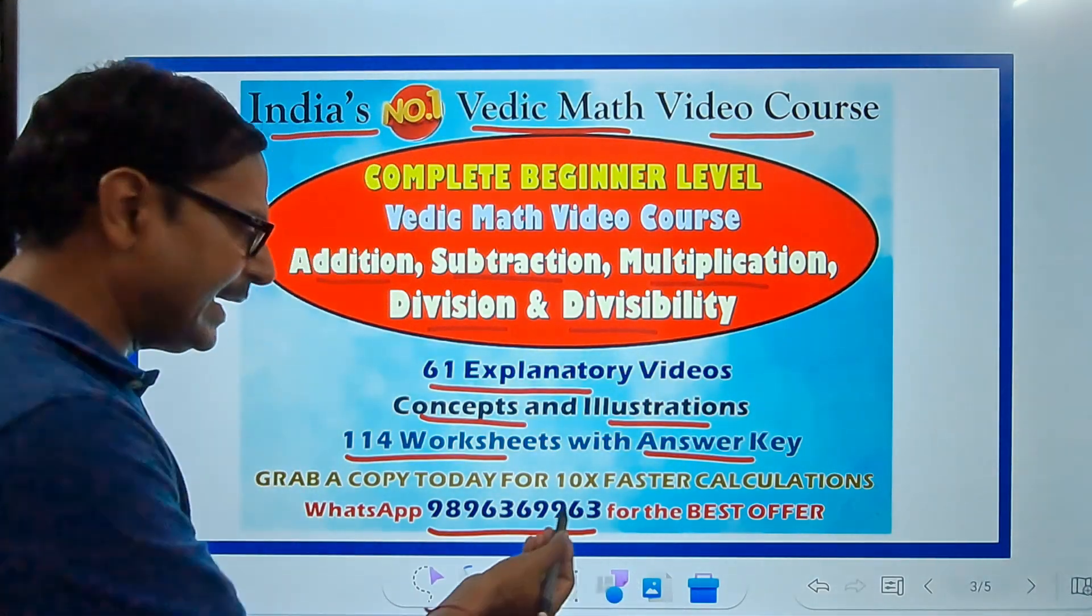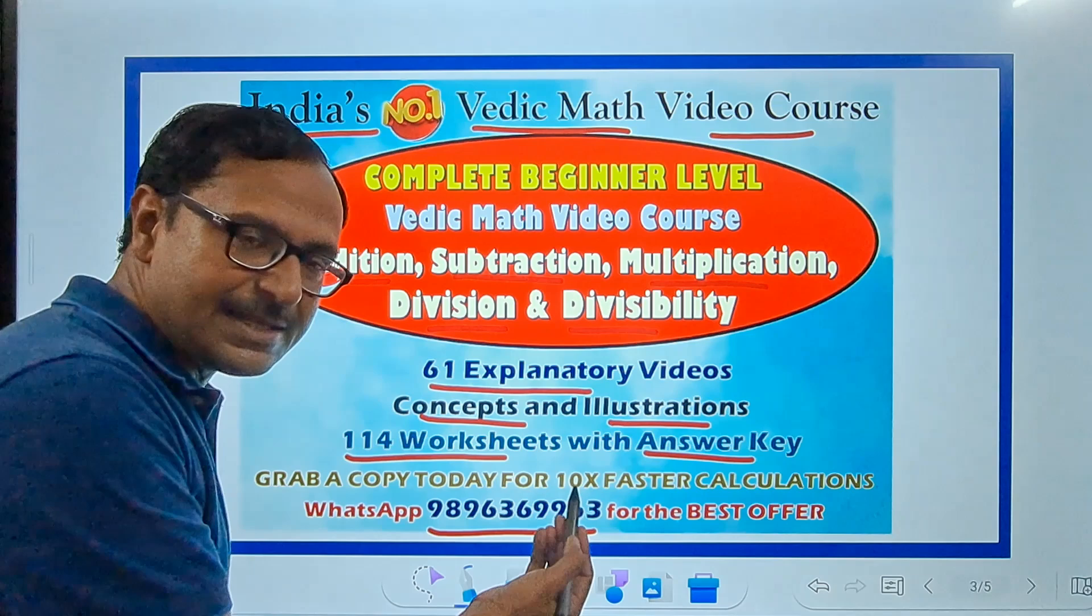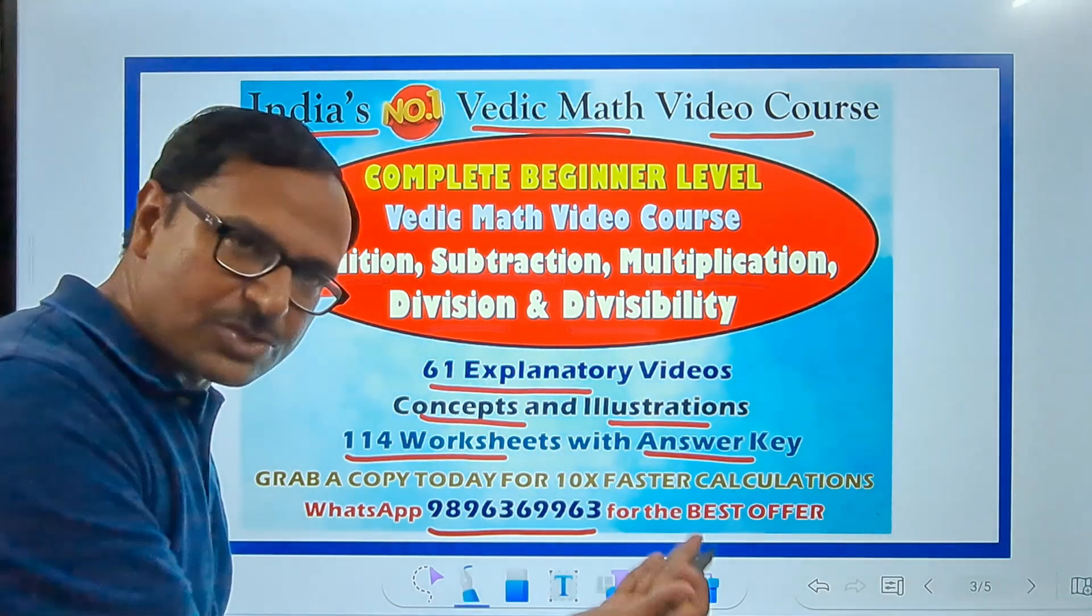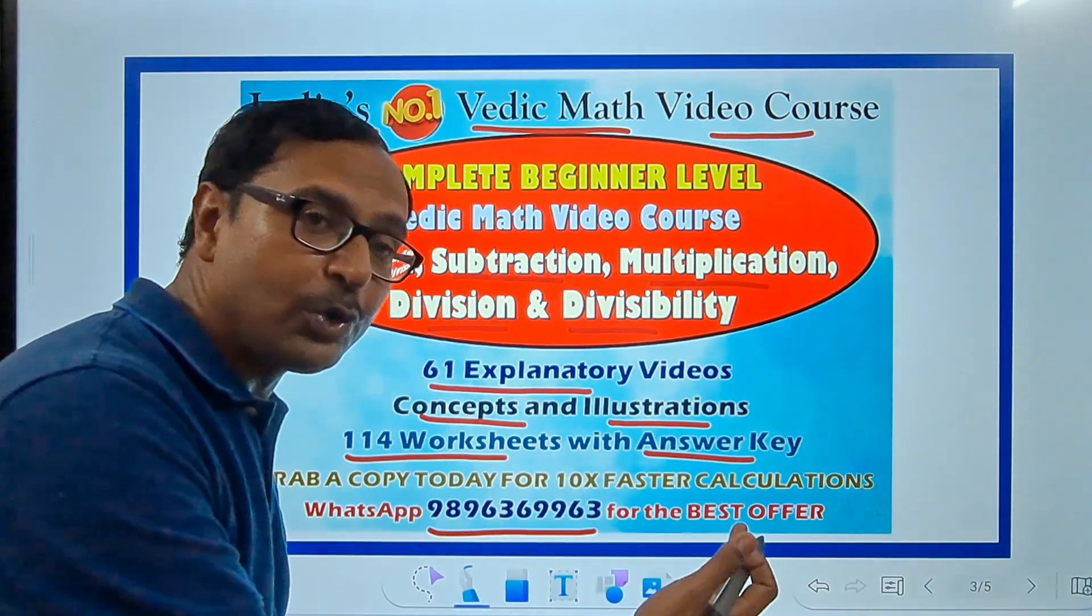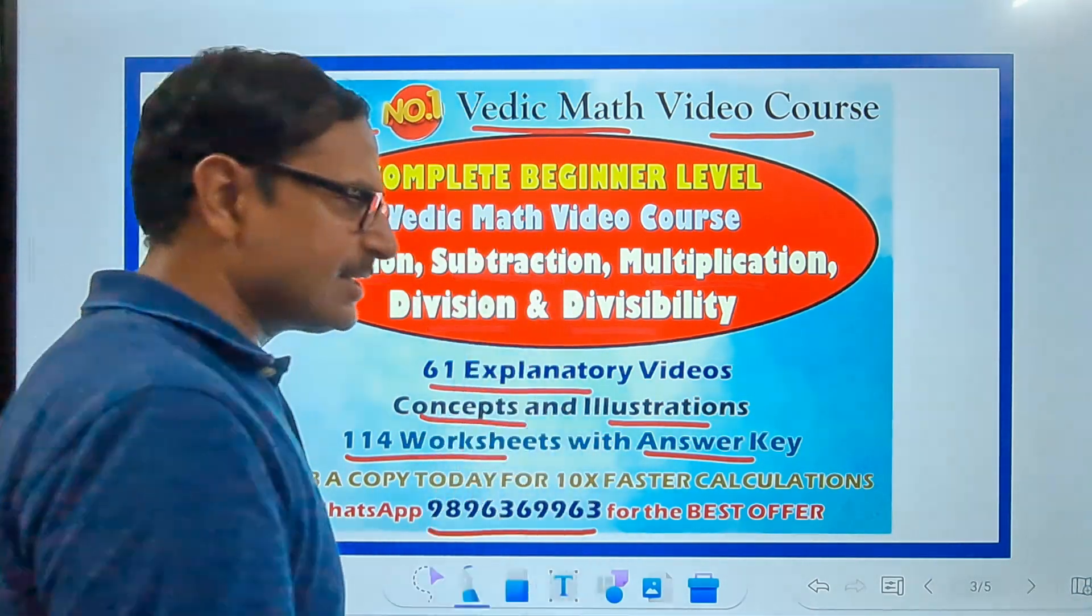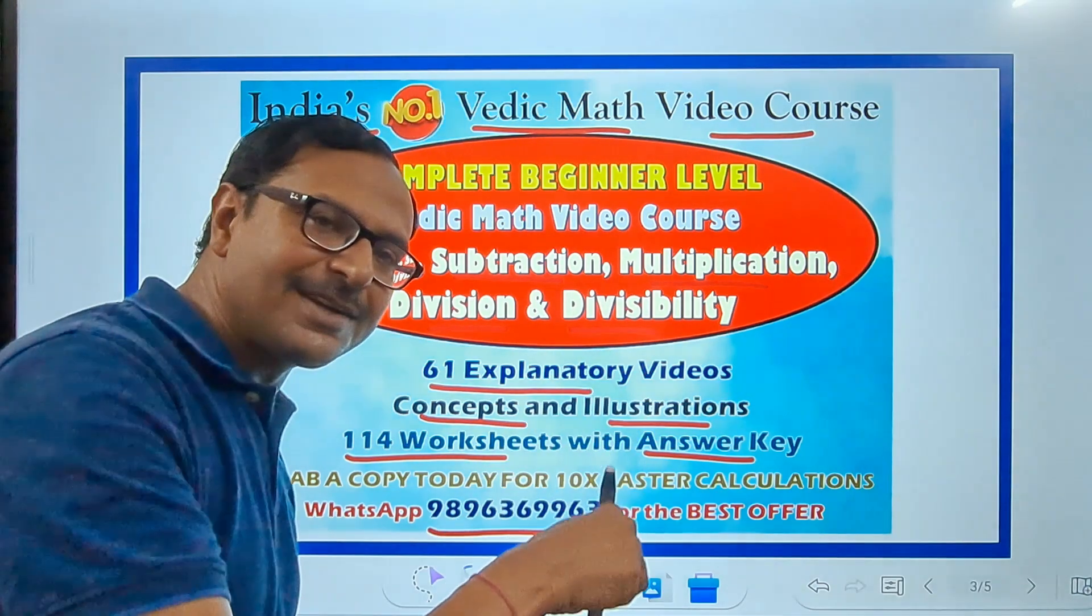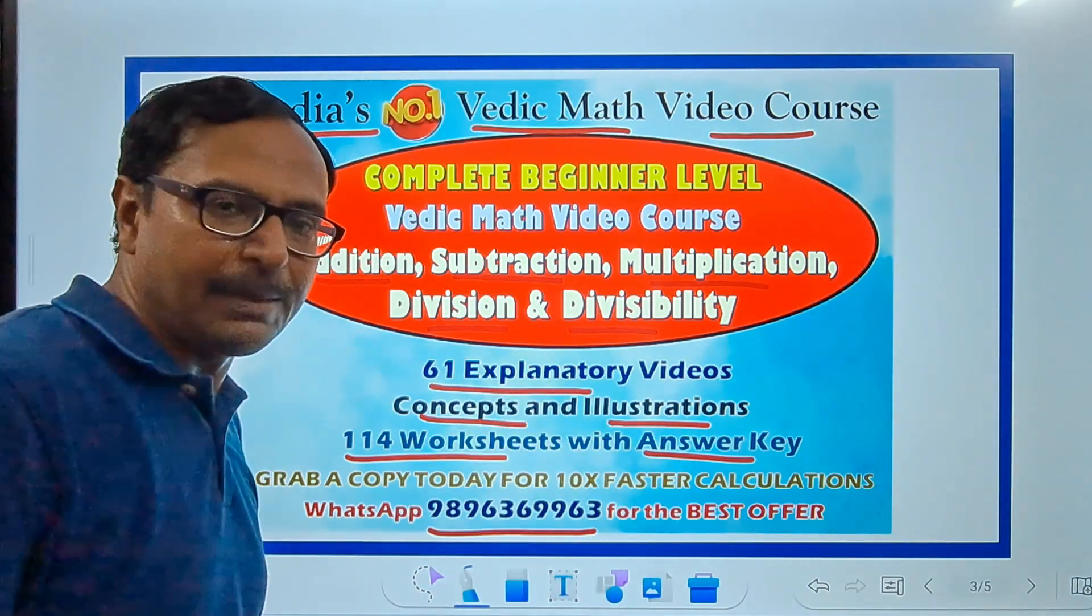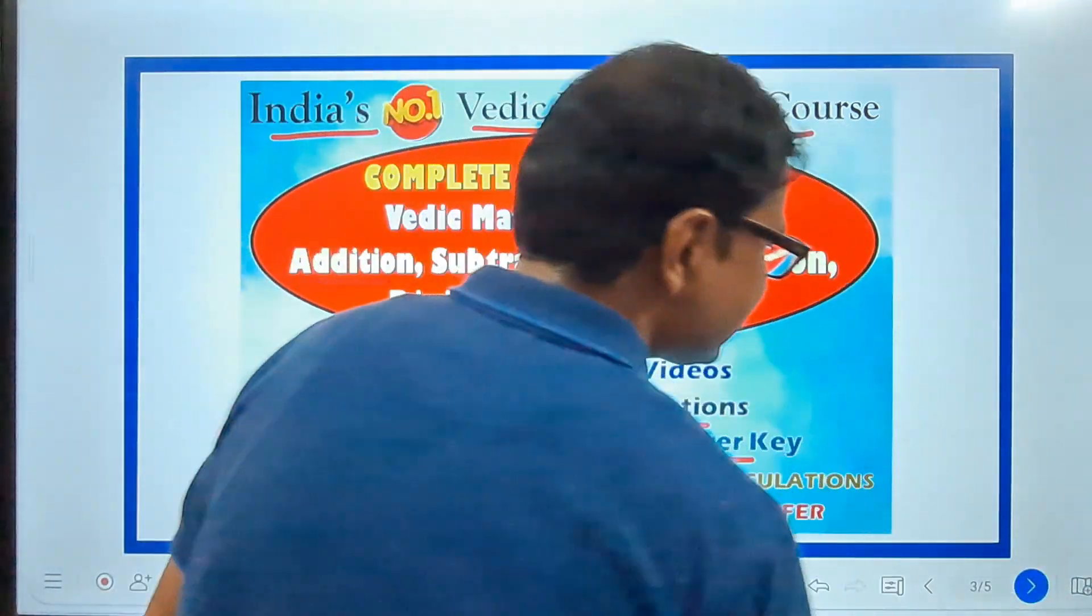Send me a message on WhatsApp, 9896369963. This is the number. I'll tell you what is the best offer going on right now. And I'm sure you are going to calculate 10 times faster by studying this course. Let's take another example. The WhatsApp number is given here in the description box below. So, you can copy it from there. Let's see another example.